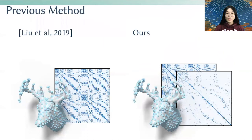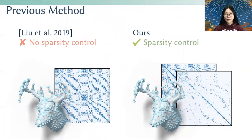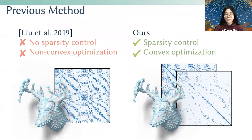However, their work has no sparsity control of the coarse matrix and results in a denser operator. In contrast, our method allows the user to freely control the sparsity pattern. Additionally, their method uses a non-convex formulation, and their gradient descent may not converge to the global optimum. Whereas our method successfully formulates the problem as a convex optimization.